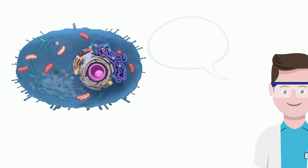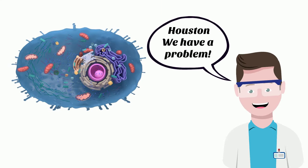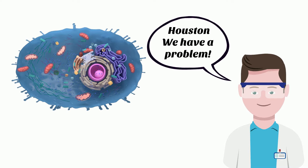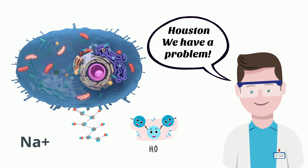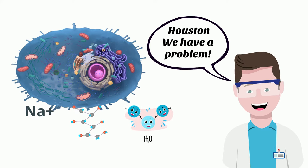Welcome to Moo Moo Math and Science. The cell has a problem. In order to stay alive, it must be able to move water, glucose, and ions like sodium across the cell membrane and into the cell.